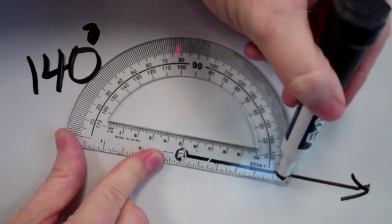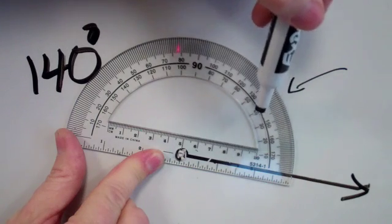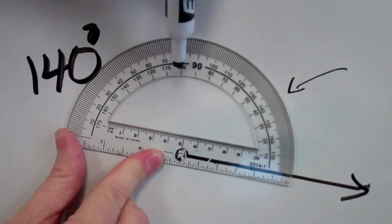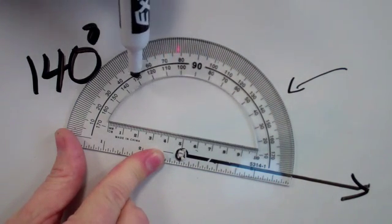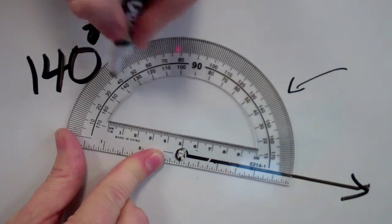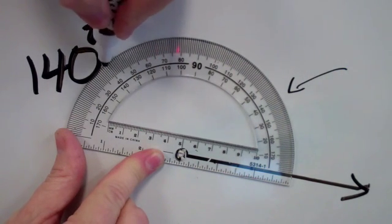Or what I could do is count by tens. I'll start here at 0 and go 10, 20, 30, 40, 50, 60, 70, 80, 90, 100, 110, 120, 130, 140. So here's 140 degrees.